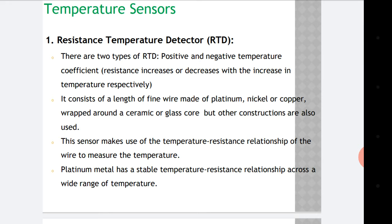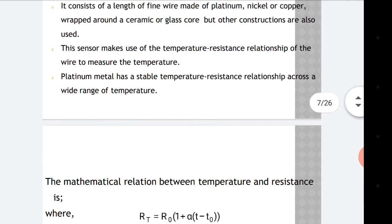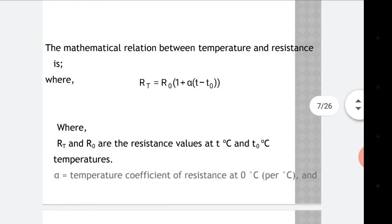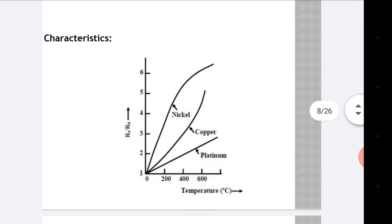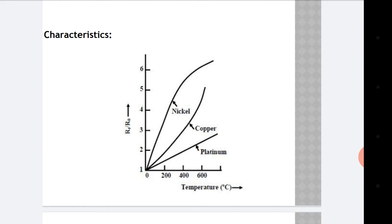Platinum metal has a stable temperature-resistance relationship across a wide range of temperatures. The mathematical relation between temperature and resistance is: R_T = R_0 × (1 + α(T − T_0)), where R_T and R_0 are the resistance values at T degrees Celsius and T_0 degrees Celsius respectively, and α is the temperature coefficient of resistance at zero degrees Celsius.